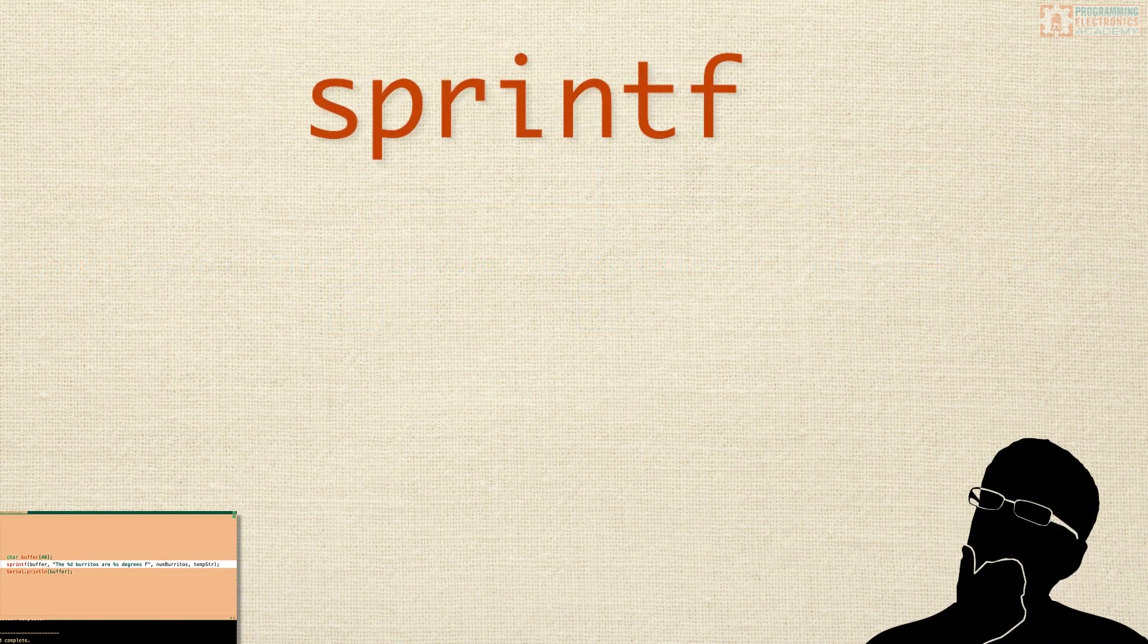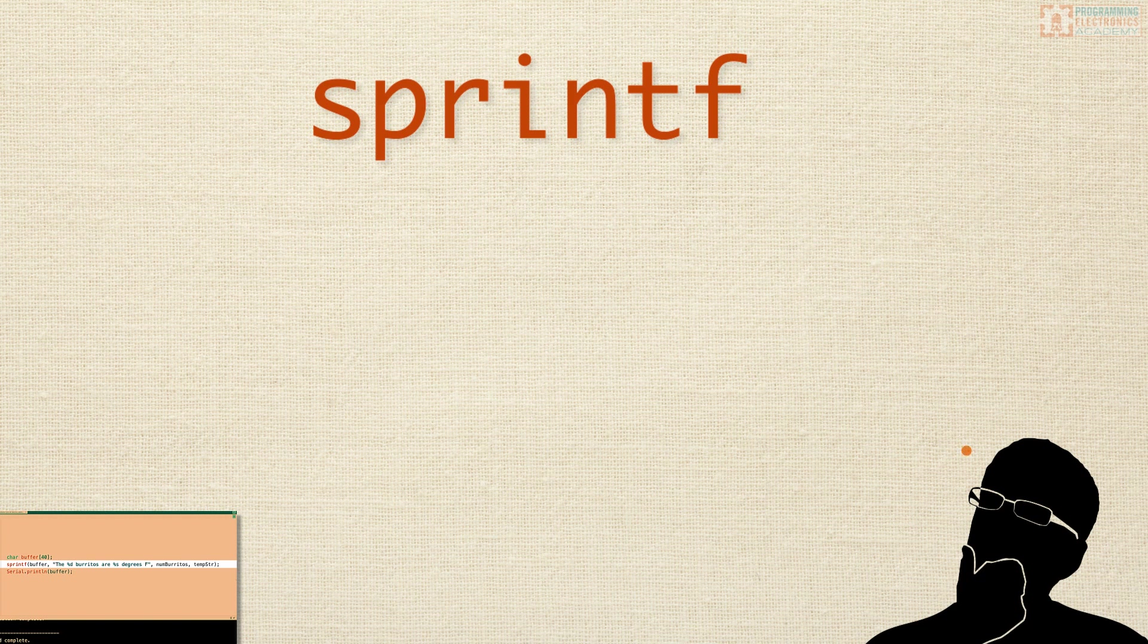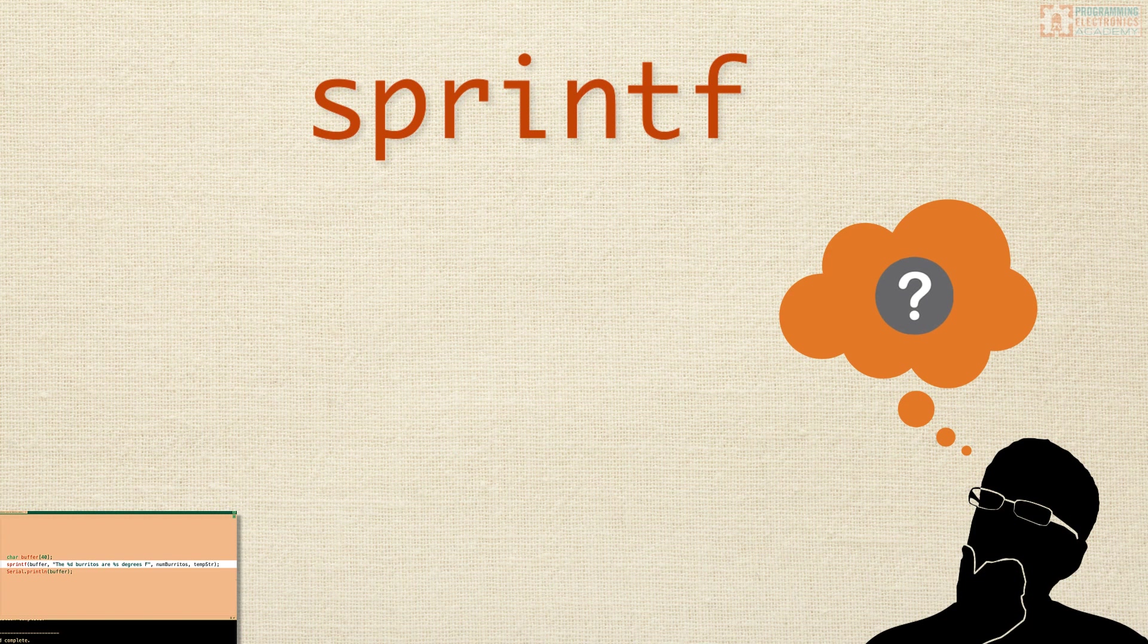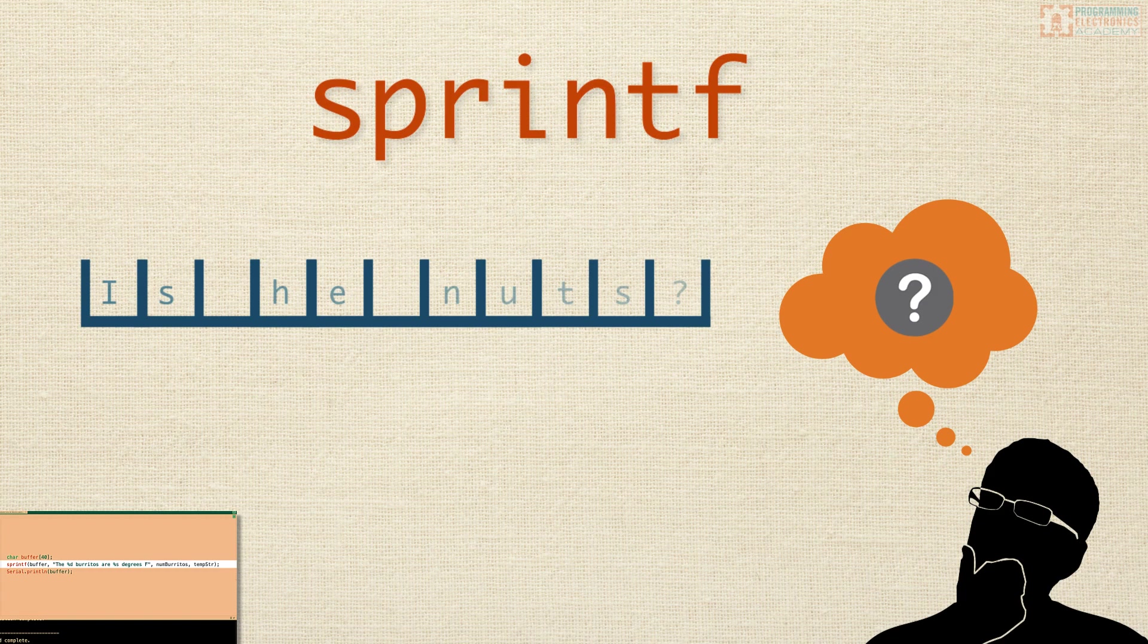Hopefully, this whole sprintf thing is kind of making sense so far. But maybe you've got this little nagging question right now. You're like, hey, wait a second. I thought you said that the s character formatter was for a string of characters. But the temperature in Fahrenheit is a floating point value. What gives?